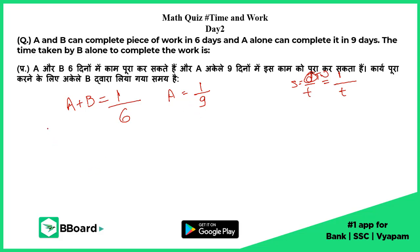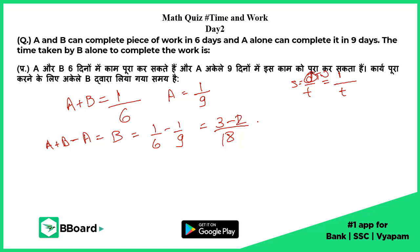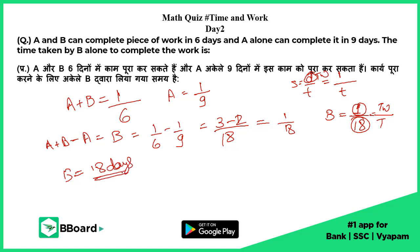So B's rate is 1 upon 6 minus 1 upon 9. This will be 1 upon 18. So B equals 1 upon 18, meaning B can complete the total work in 18 days.